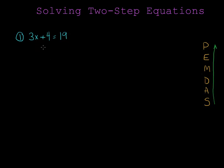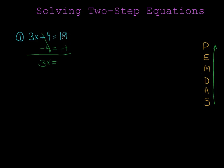I can get rid of a plus 4 with a minus 4 because the opposite of addition is subtraction. Now if I subtract 4 from one side of the equation I also need to subtract 4 from the other side. Plus 4 minus 4 is 0 and that goes away. Now I only have 3x on one side and on the other side I have 19 minus 4 which is 15.